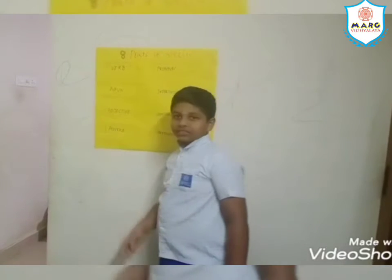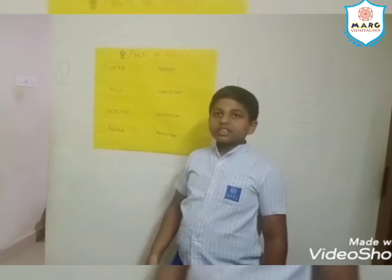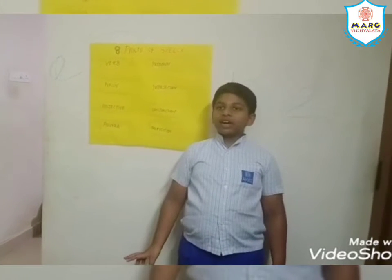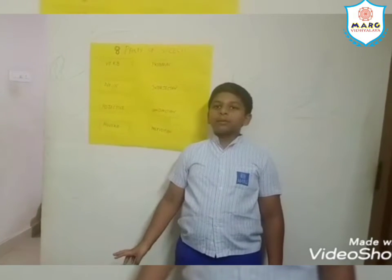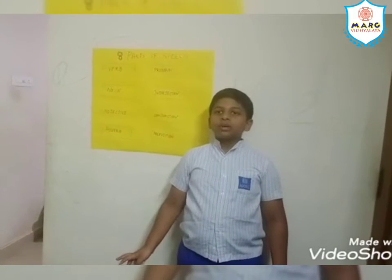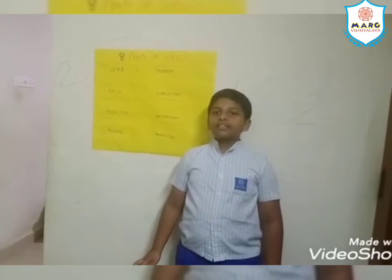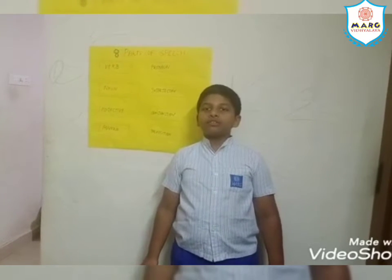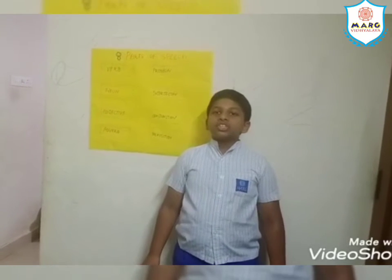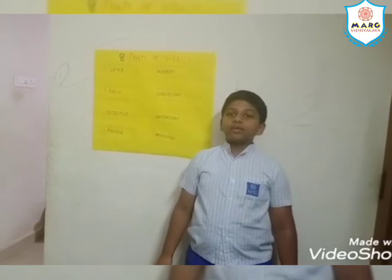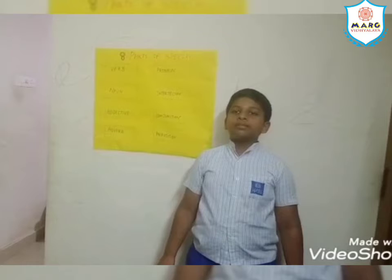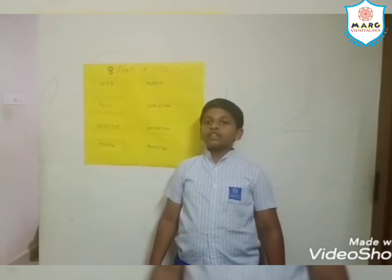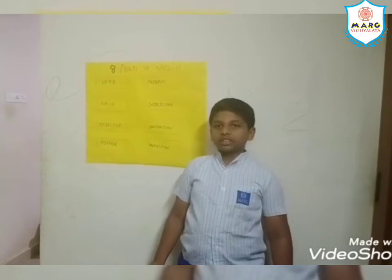An adjective describes a noun. Examples: short, beautiful. In the sentence 'She is a beautiful girl,' 'beautiful' is the adjective.